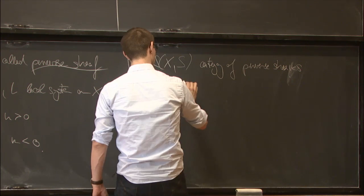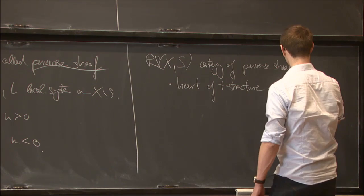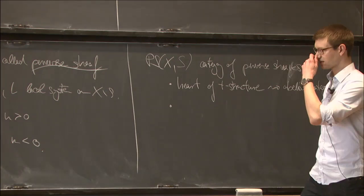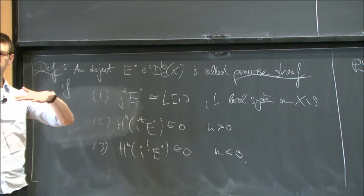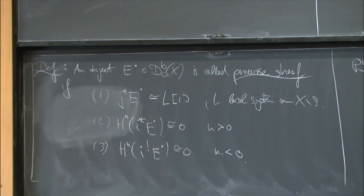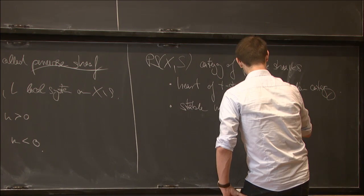Just to point out two things: it's the heart of a t-structure obtained by the recollement process, which makes it an abelian category. The second question is why perform this specific shift — why shift local systems just by degree one? The statement is that this is the unique shift such that this abelian category is actually stable under Verdier duality. That's one of the motivations for considering this specific category.